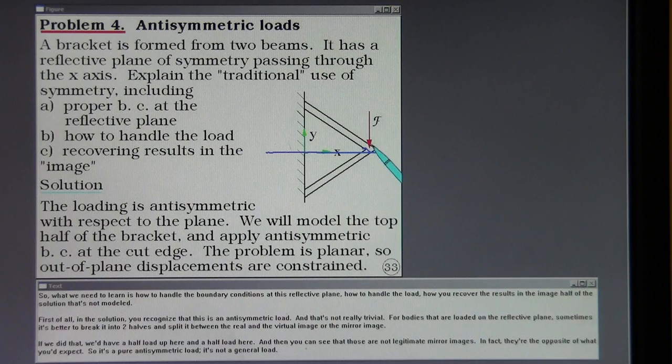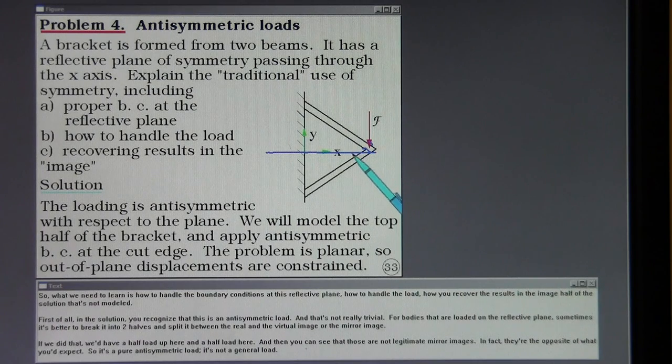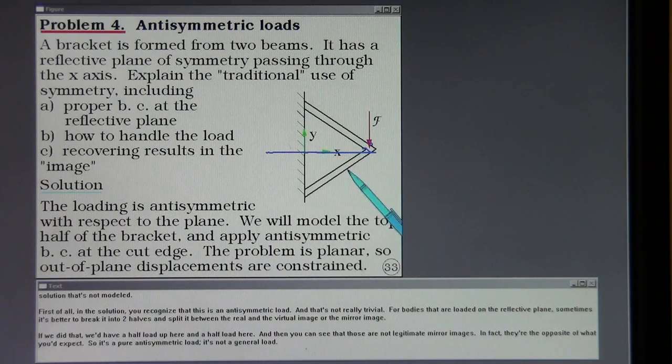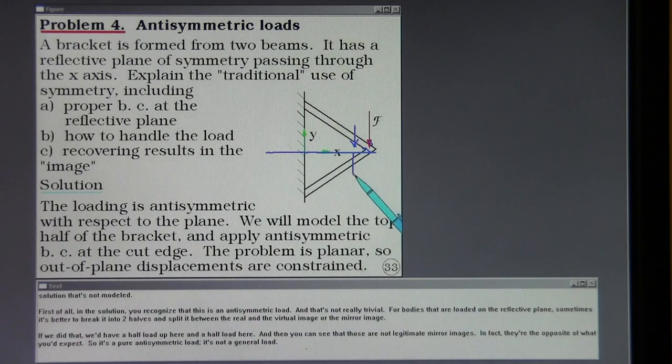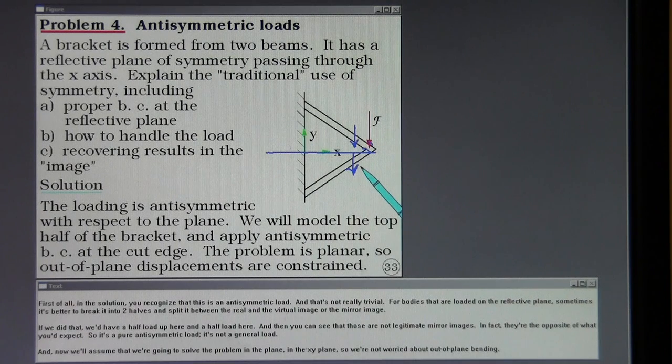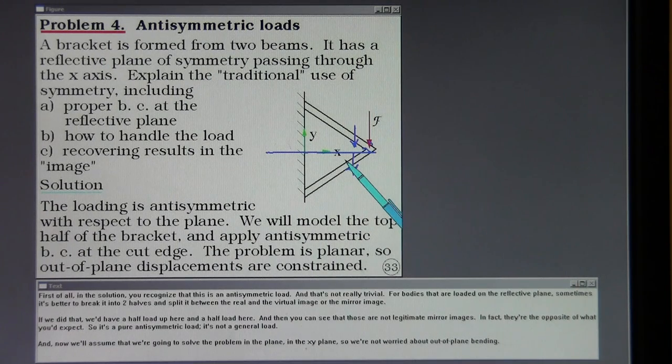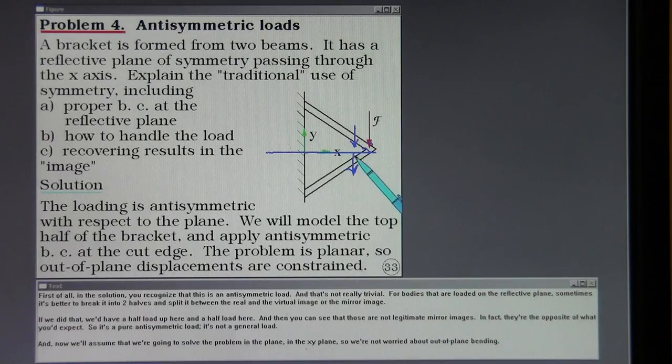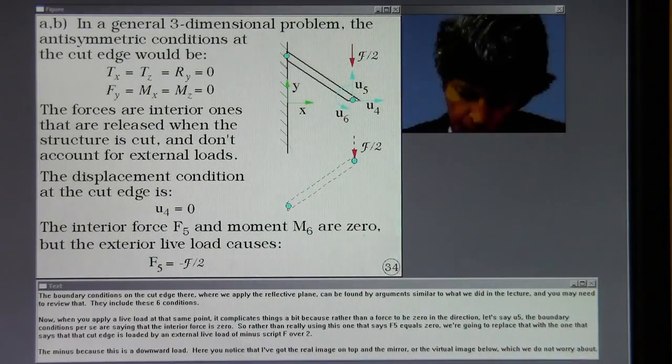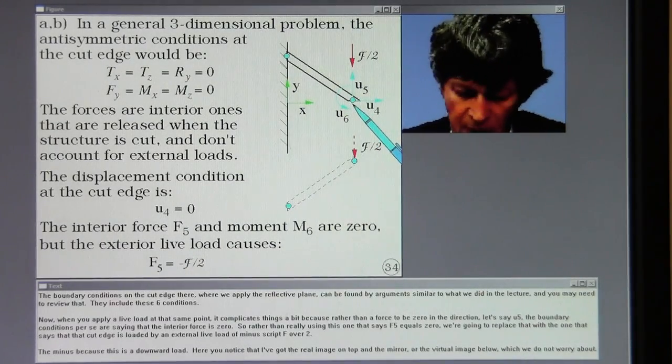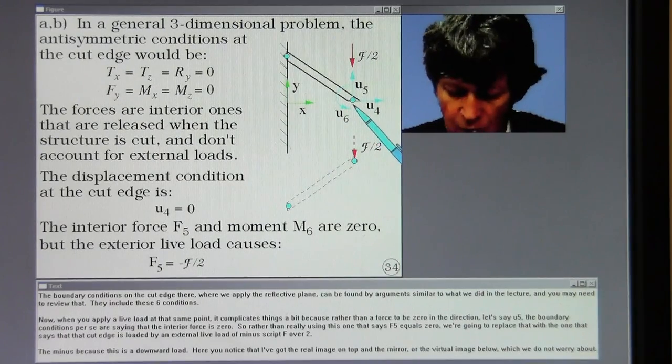First of all, in the solution, you recognize that this is an anti-symmetric load and that's not really trivial. For bodies that are loaded on the reflective plane, sometimes it's better to break it into two halves and split it between the real and the virtual image or the mirror image. If we did that, we'd have a half load up here and a half load here. And then you can see that those are not legitimate mirror images. In fact, they're the opposite of what you'd expect. So it's a pure anti-symmetric load. It's not a general load. And we'll assume that we're going to solve the problem in the plane, in the x-y plane, so we're not worried about out-of-plane bending.